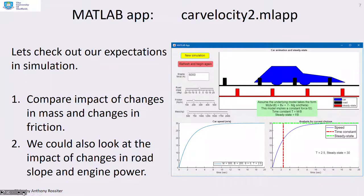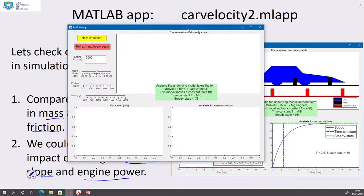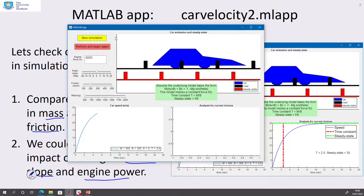So we've got this app about car velocity, and we're going to use this to try and reinforce our expectation of what happens as I make changes in mass and changes in friction, and also what happens if I change the road slope or the engine power. So let's bring this animation across. Here it is. So what we're going to do, we'll start with a simple simulation with a mass at 500. And there you can see it's running.